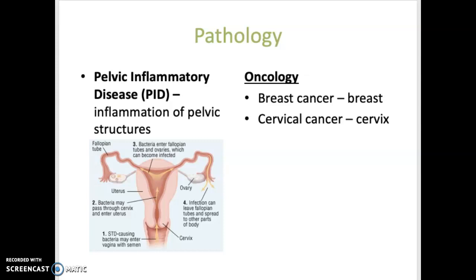Pelvic inflammatory disease is inflammation of the uterus, fallopian tubes, and other pelvic structures. The cause is often an infection or an STD, and it can lead to scarring in the reproductive tract, which can make it difficult to get pregnant. Regarding oncology, breast cancer is carcinoma in the breast tissue and is the most common type of cancer among women in the United States. Cervical cancer is carcinoma of the cervix, frequently associated with infections due to sexual activity, and can be detected early through regular gynecological visits and pap tests.